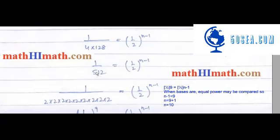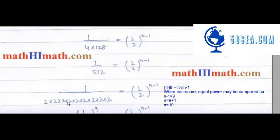512 کو 2 کے multiplicative factors میں change کریں۔ 2 جو ہے وہ 9 times multiply ہو رہا ہے، یعنی 1 over 2 raised to power 9 is equal to 1 over 2 raised to power n-1۔ Bases equal ہوئیں so powers compare کر سکتے ہیں۔ So n-1 will be equal to 9، یعنی n = 9+1 = 10۔